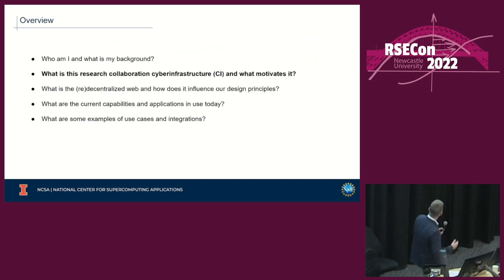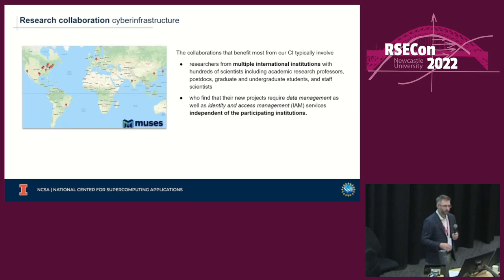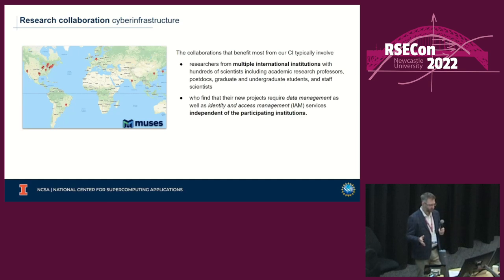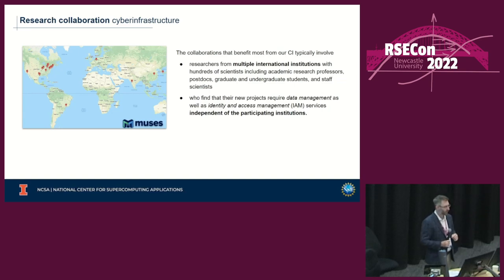What is this research collaboration CI and what motivates it? The collaborations our CI targets typically include scientific researchers from multiple, often international, institutions who find their projects require data management as well as identity and access management services — something they typically discover when beginning to consider their options for tools and services, even basic communications.